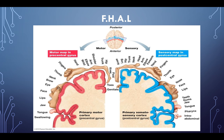The homuncular patterns of motor and sensory cortical areas can be remembered with the mnemonic FHAL — Face, Hand, Arm, Leg. The face is represented at the lateral outer portion of the cortex, and working medially you progress through hand, arm, and then leg, which is represented in the medial portion of the cortex. This matters for stimulation: if there's a cortical lesion affecting the hand area, you stimulate the hand to target that cortical region.